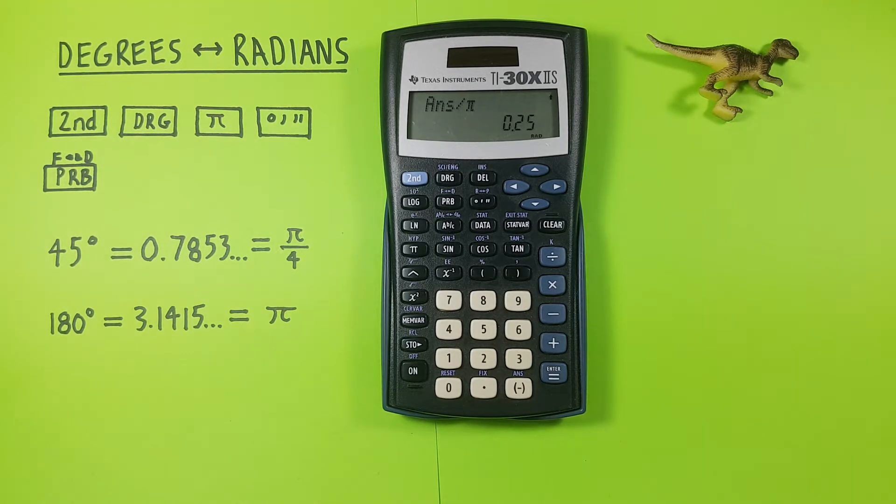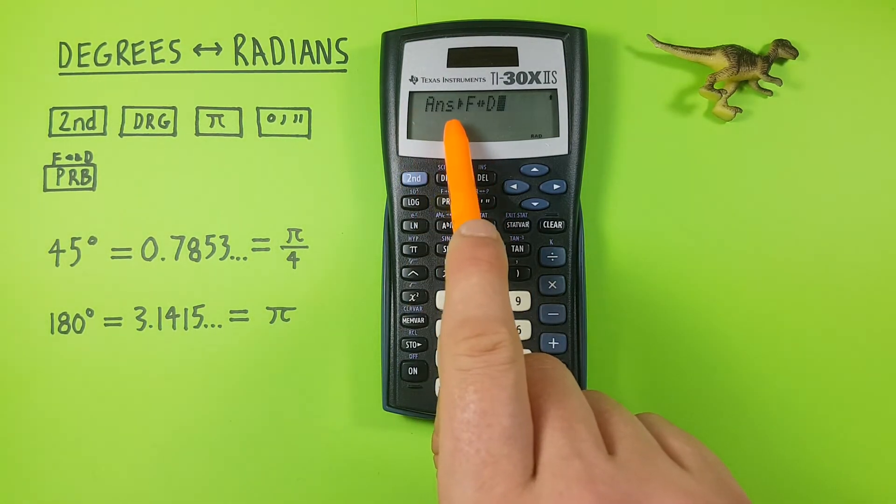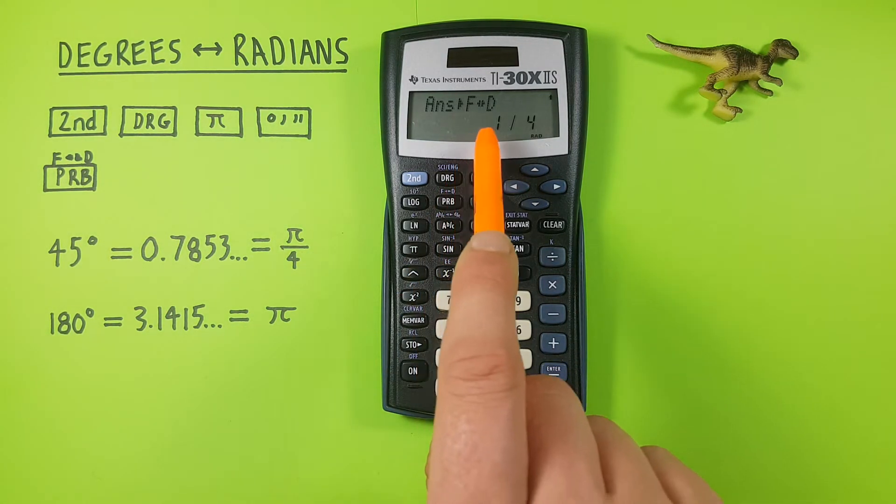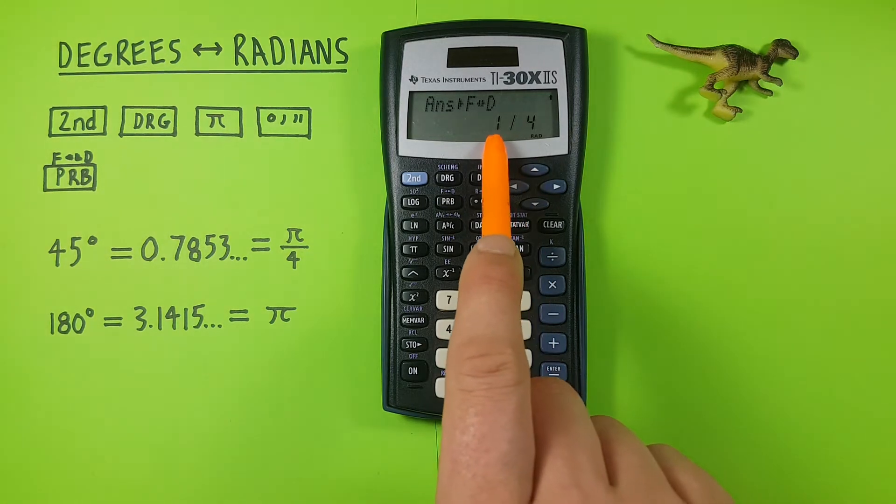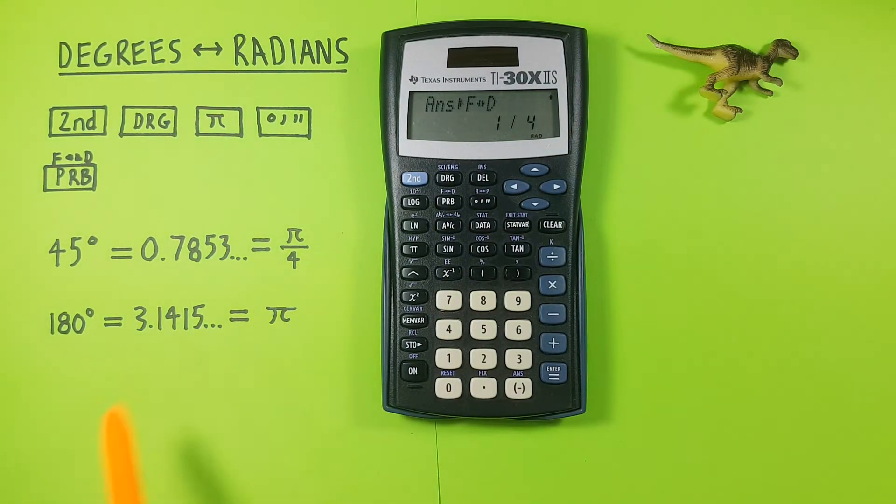So we press 2nd PRB, there we have answer fractions to decimals conversion, press enter and we see that 0.25 has converted to 1 over 4, which is the same as pi over 4 in this context.